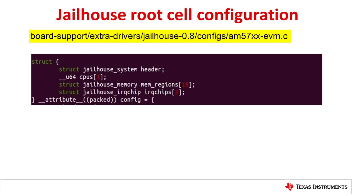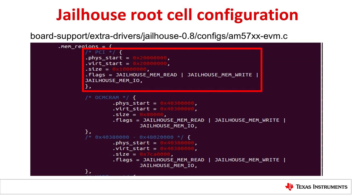The jailhouse root cell configuration file is located in the directory shown highlighted and contains the assigned resources such as CPUs, memory regions, etc. In this case, the PCIe memory resource needs to be configured in the root cell configuration file. The mem_regions array needs to be incremented by one entry to accommodate the PCIe configuration. Then the PCIe address information needs to be entered in mem_regions of the root cell configuration — we added it at the beginning of the mem_regions array.